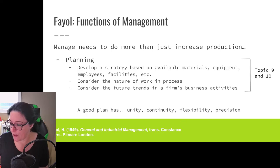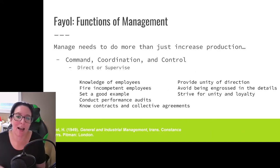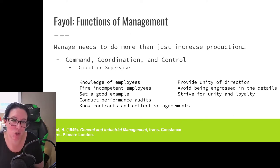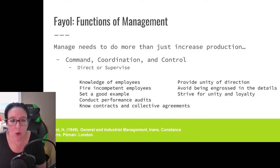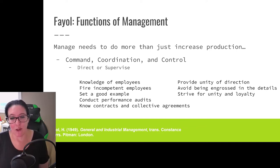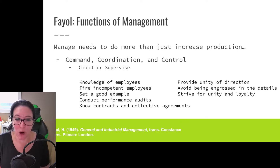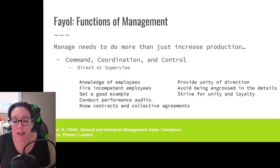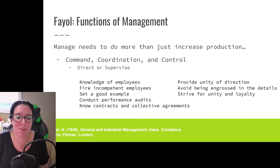The last piece is command, coordination, and control — the directing or supervising of people. The manager needs to have knowledge of the employees: who they are and what their talents are. They need the ability to address incompetence, set a good example — coming back to Bernard's idea of being a moral leader — and be able to perform performance audits to evaluate workers. They also need good knowledge of contracts and collective agreements, so they understand what they are and are not allowed to ask employees to do when working with unions.